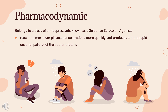Rizatriptan causes transient increases in blood pressure to some extent. In vitro, rizatriptan was shown to contract isolated human coronary arteries. However, since the EC50 for this effect is high, rizatriptan is not expected to cause myocardial ischemia at therapeutic plasma concentrations in patients with normal coronary circulation.